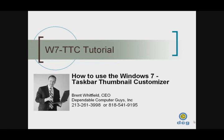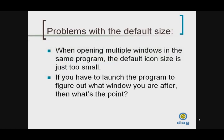I'm going to show you today how to use the Windows 7 taskbar thumbnail customizer to improve the look of the icons in Windows 7. One of the problems with Windows 7, as I see it, is that when you open multiple windows in the same program, the default icon size is so small that you really can't tell what the different programs you have running are. I think Microsoft got a lot of things right with Windows 7, but one of the things I think could be improved on is this icon size issue.